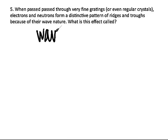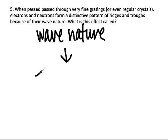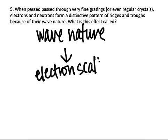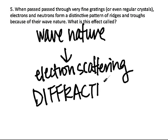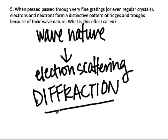Due to the wave nature of light, electrons are scattered when passed through crystals, for example. We call this effect diffraction. This effect is useful for biochemists, for example.